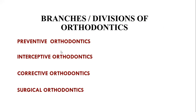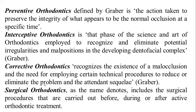The branches of orthodontics include preventive orthodontics, interceptive orthodontics, corrective orthodontics, and surgical orthodontics. Preventive orthodontics, as defined by Graber, is the action taken to preserve the integrity of what appears to be a normal occlusion at a particular time. Interceptive orthodontics is that phase of the science and art of orthodontics employed to recognize and terminate potential irregularities and malpositions in the developing dentofacial complex — also defined by Graber. Corrective orthodontics recognizes the existence of a malocclusion and the need for employing certain technical procedures to reduce or eliminate the problem. Surgical orthodontics includes surgical procedures carried out before, during, or after active orthodontic treatment.